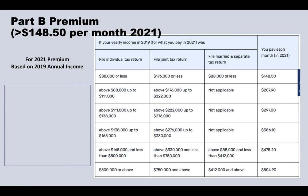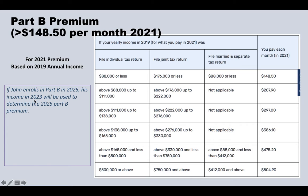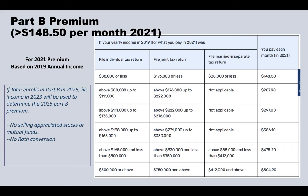The Part B premium for a given year is based on income from two years prior — so if John enrolls in Part B in 2025, his 2023 income will determine his 2025 Part B premium. Therefore, John should manage his income in 2023 and 2024: avoid selling appreciated stocks or mutual funds, avoid Roth conversions, delay other income sources, and consider selling investments at a loss to offset gains and reduce MAGI.